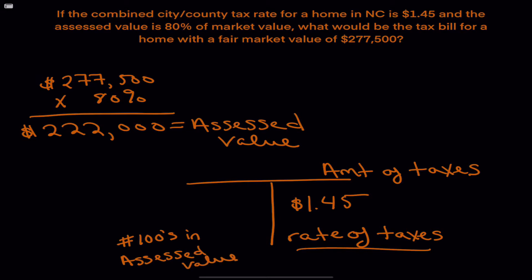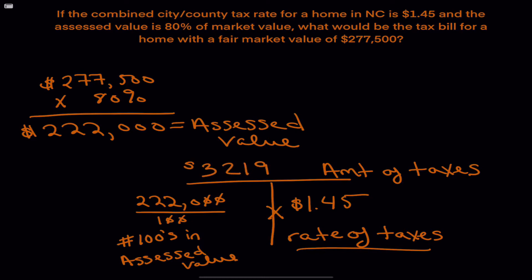The amount of taxes is based on the number of hundreds in the assessed value. Our assessed value was $222,000, so we need to know how many hundreds there are. There are 2,220 hundreds in the assessed value. Because it's a T-bar, we multiply, and that gives us an answer of $3,219. The tax bill is $3,219.